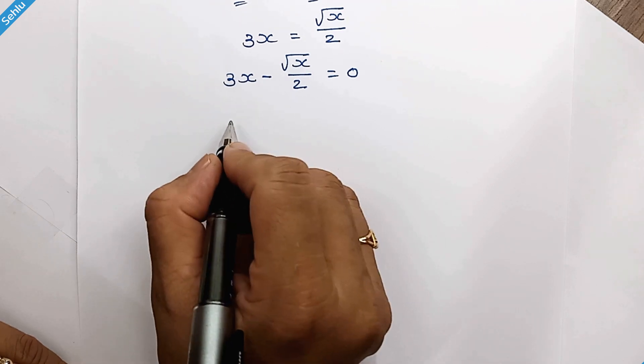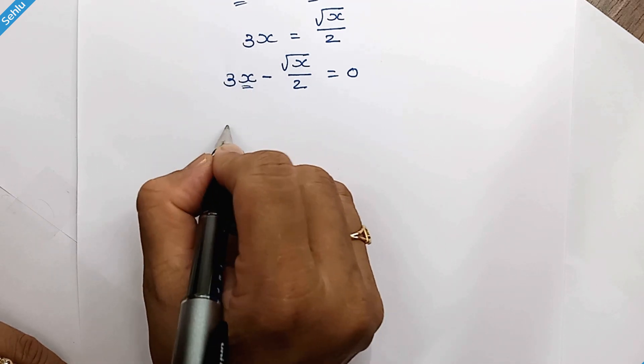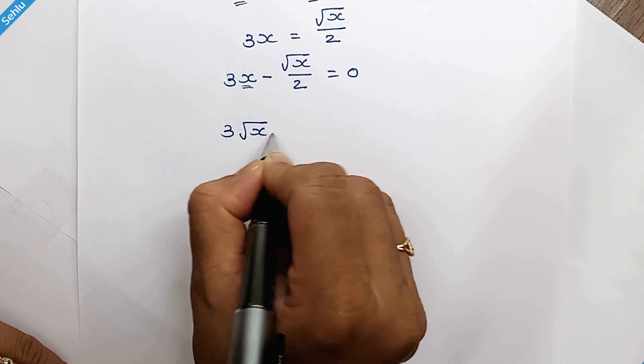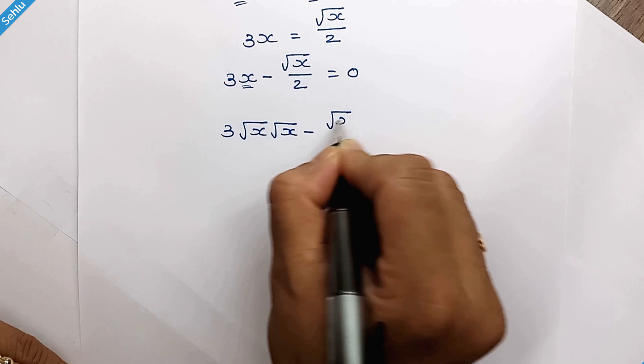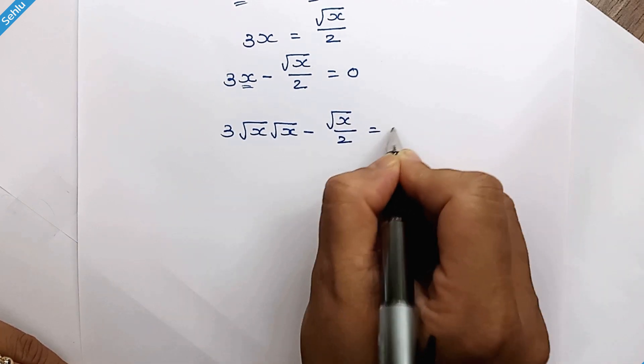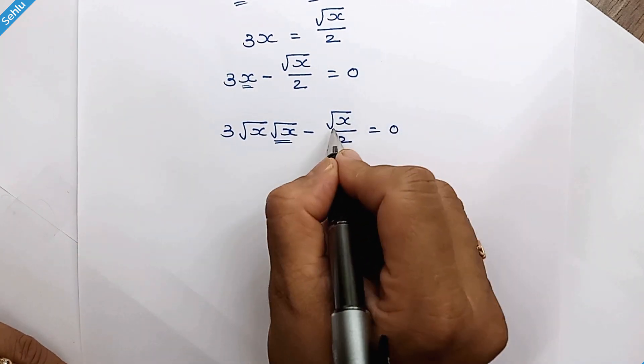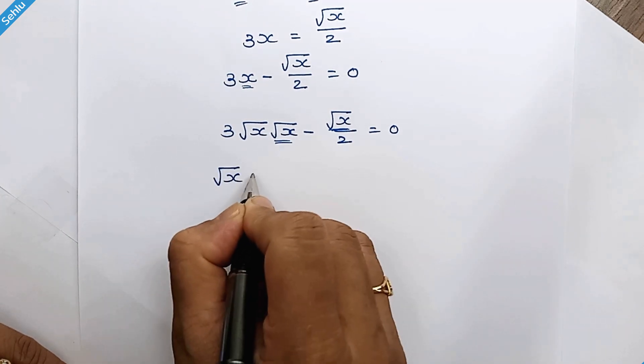Now what we are going to do is x is square root of x times square root of x, right? So we can factor out square root of x.